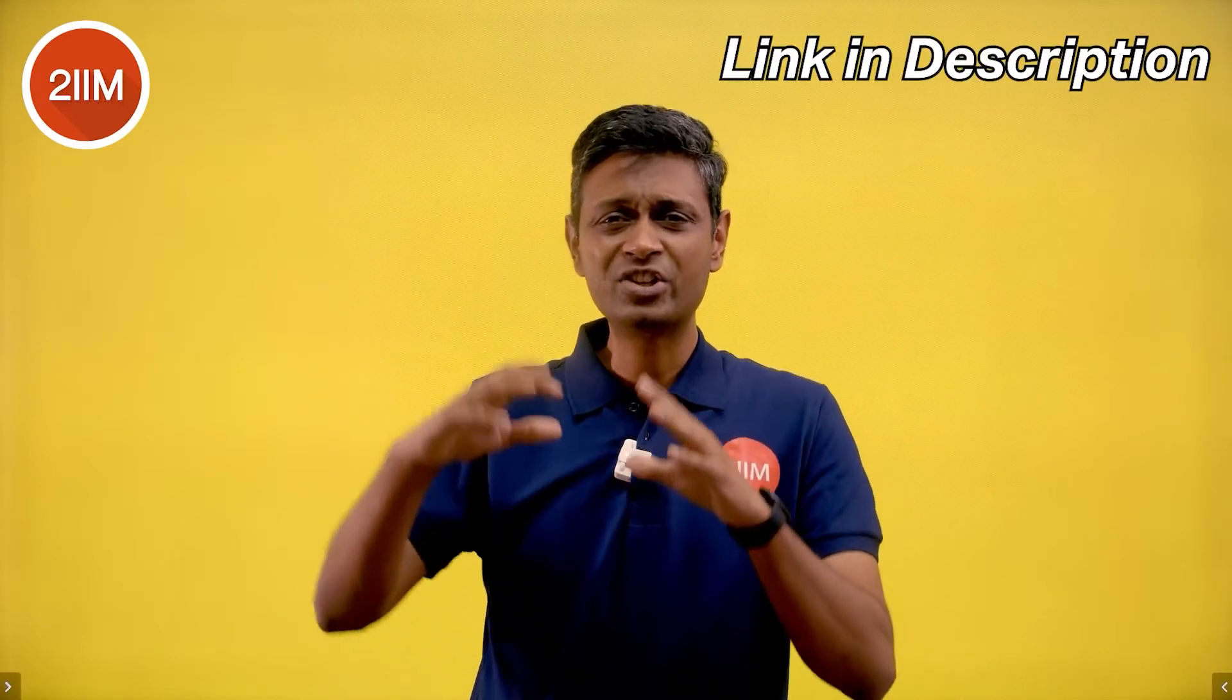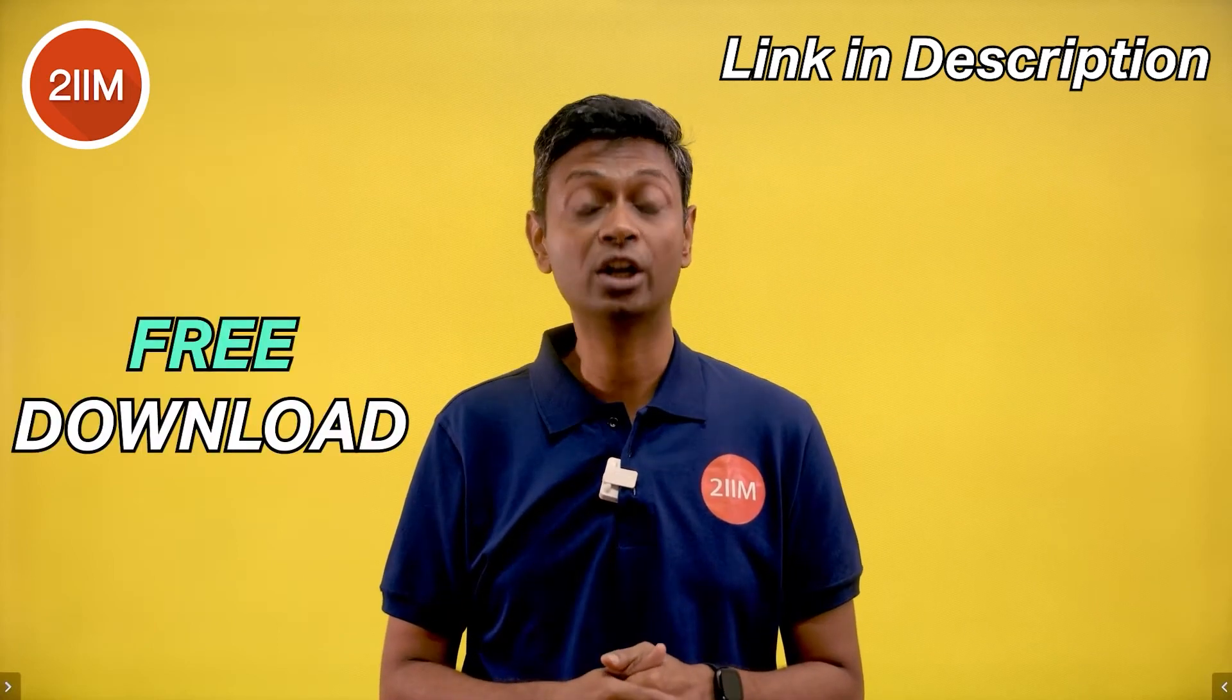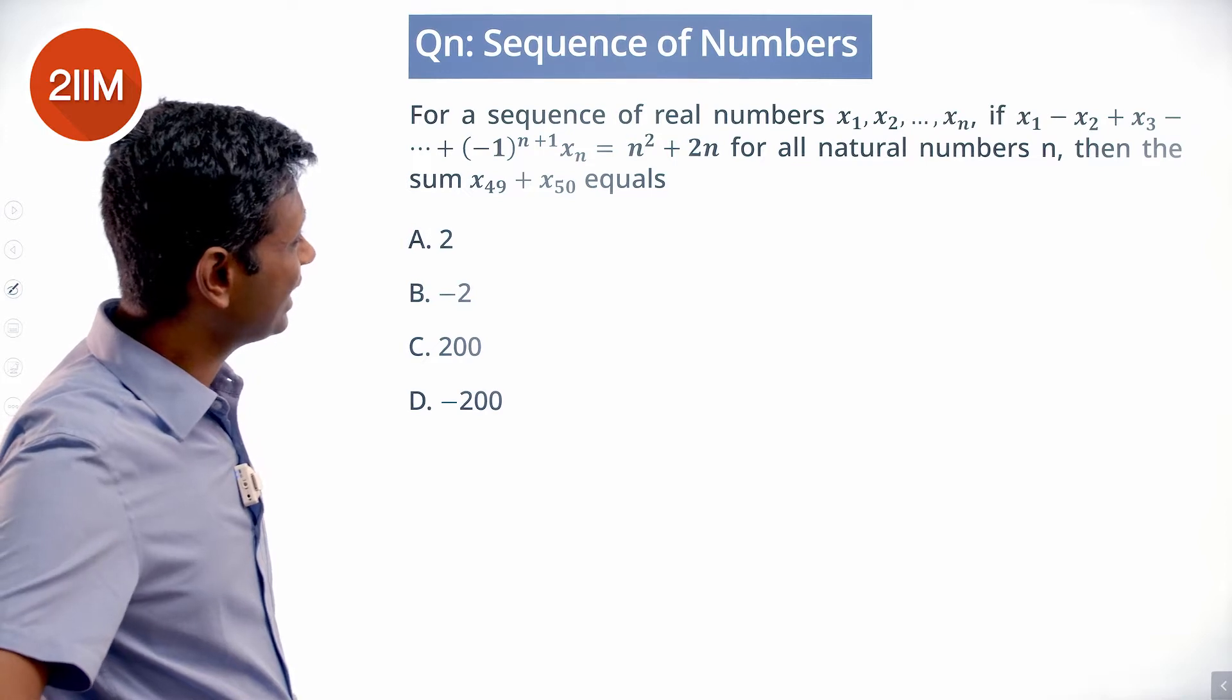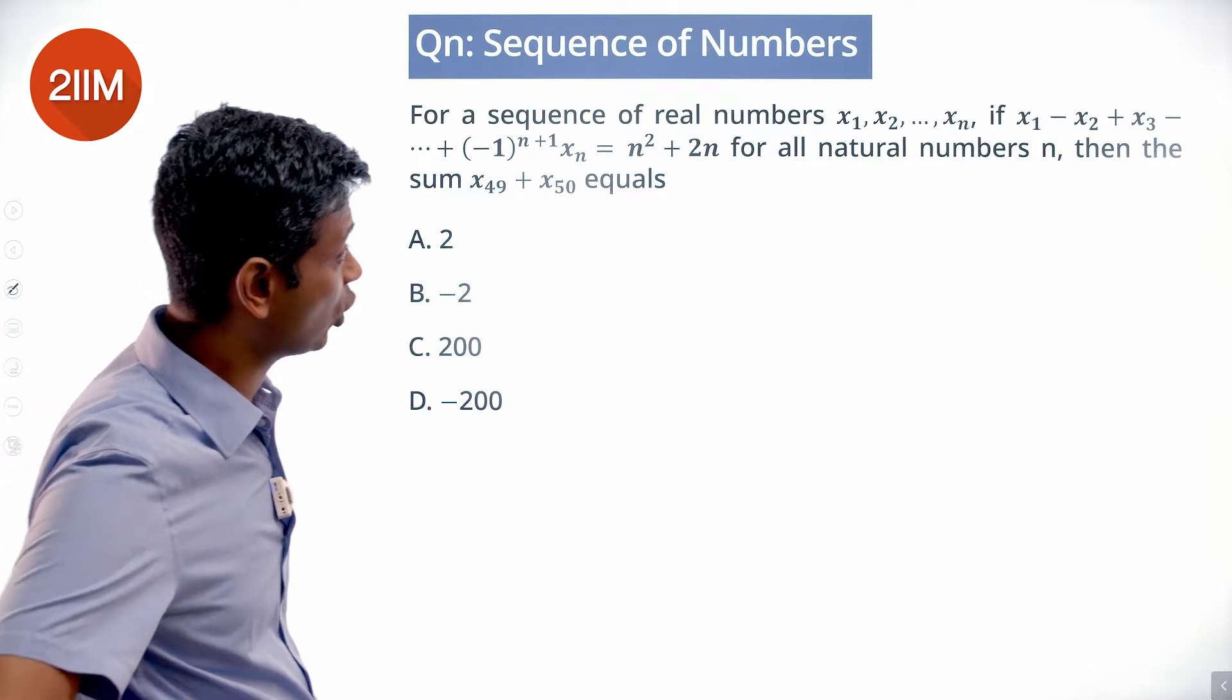It's a fabulous link, click that, see what variant works for you, download the schedule somewhere and you're good to go. Best wishes. For a sequence of real numbers x1, x2, x3 till xn, if x1 minus x2 plus x3 minus... all the way to (-1)^(n+1) times xn equals n squared plus 2n for all natural numbers n, then the sum x49 plus x50 equals...